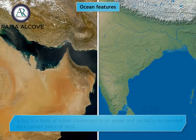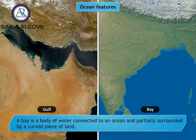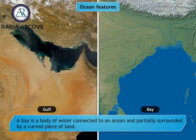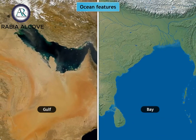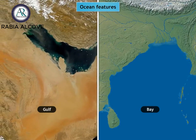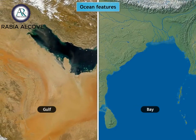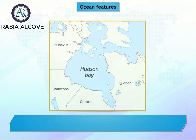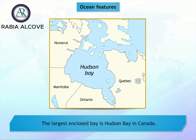A bay is a body of water connected to an ocean and partially surrounded by a curved piece of land. A bay is usually smaller and less enclosed than a gulf, and the mouth of a bay is usually wider than that of a gulf. Some bays have been formed by continental drift, while others have been formed by erosion by seawater. The Bay of Bengal is the largest bay in the world. The largest enclosed bay is Hudson Bay in Canada.